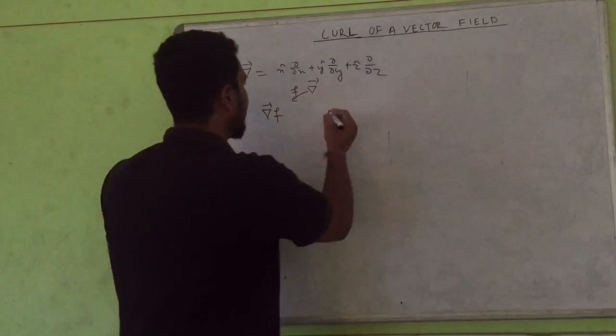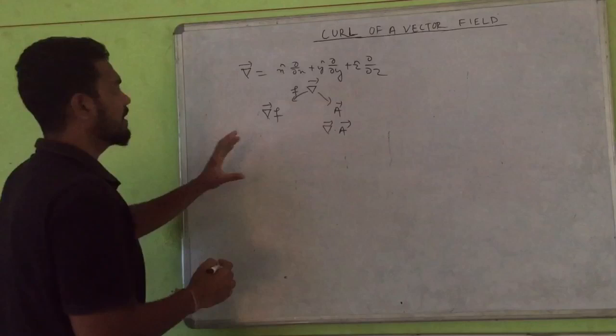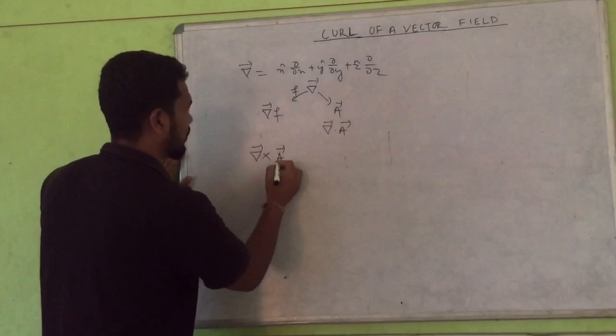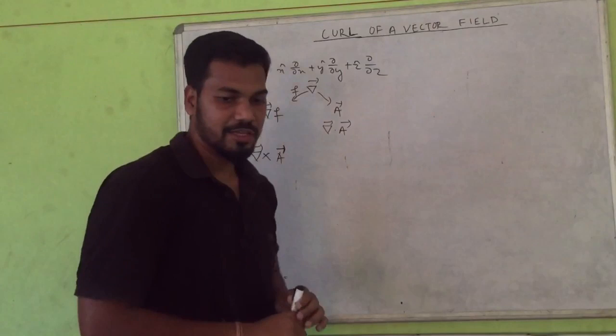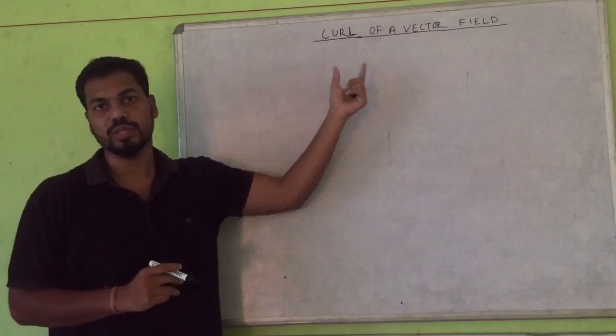When the grad operator operates on a vector, in the dot product you get the divergence of a vector field. And if we take the cross product of the grad operator with a vector, then you will get the curl of a vector field. So here we will discuss the curl of a vector field — it is simply the cross product of the grad operator with a given vector.